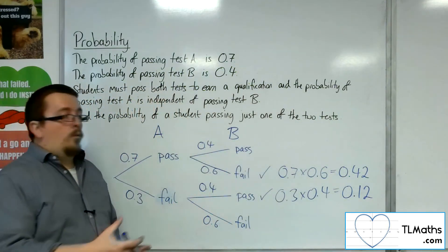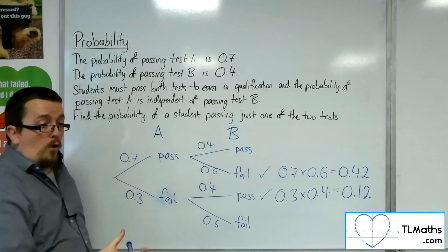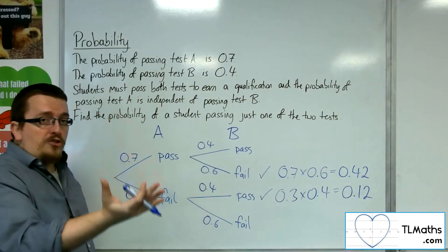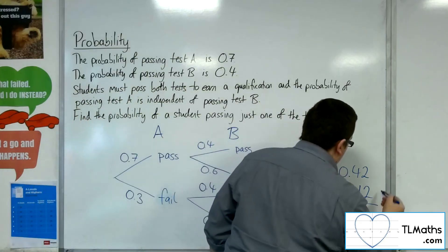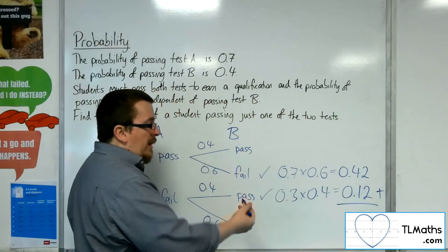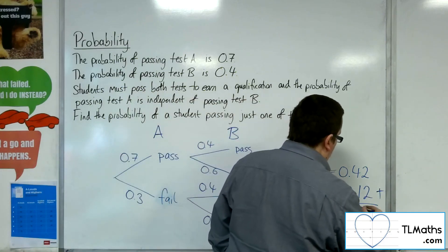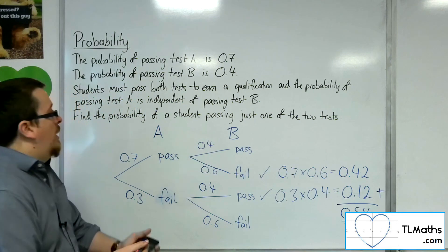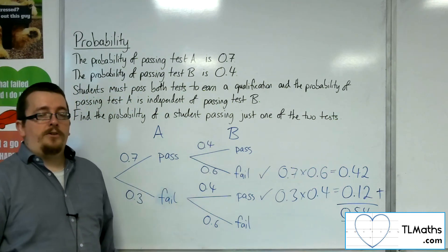We either want pass then fail, or fail then pass. Those two probabilities, because it is an 'or', we add them together. So 0.42 plus 0.12 gives us 0.54. And that is the probability of a student passing just one of the two tests.